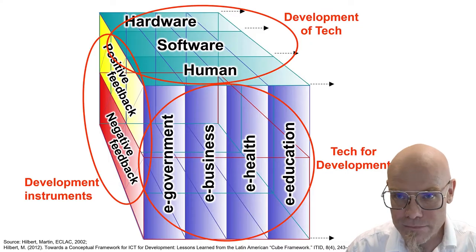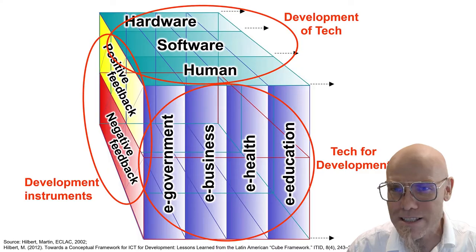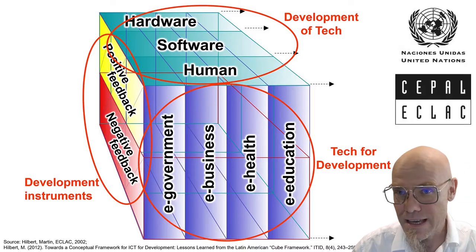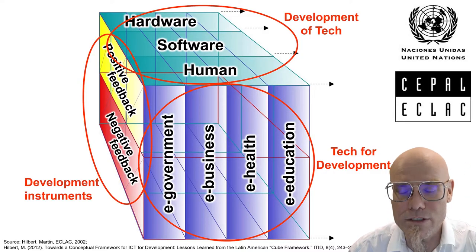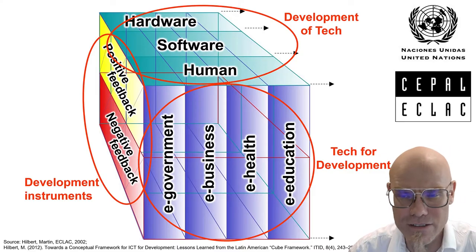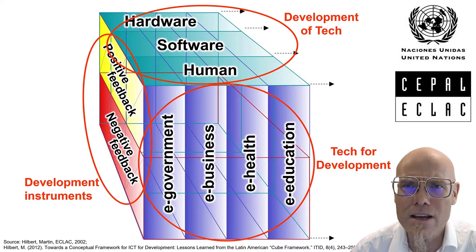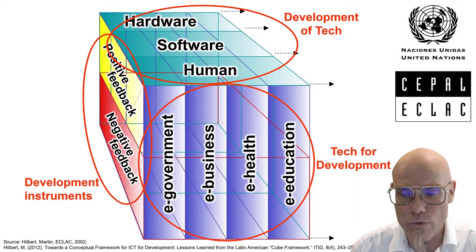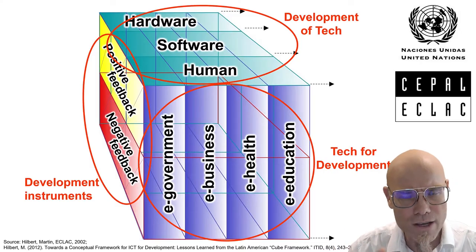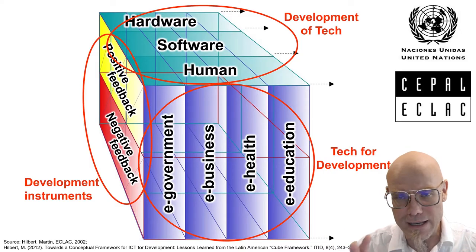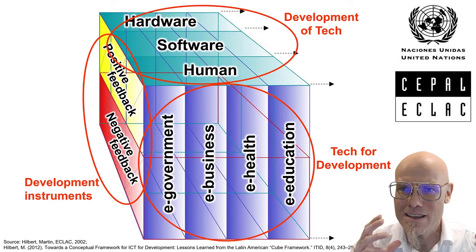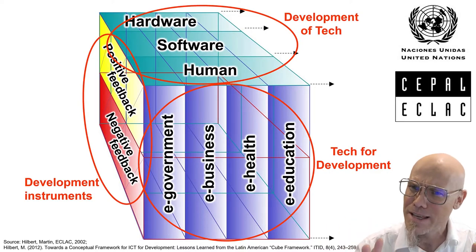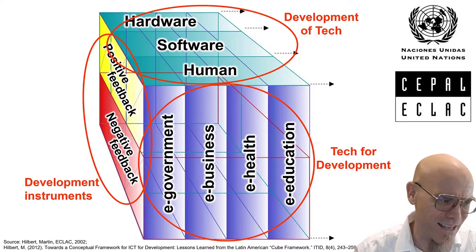These are the three dimensions. You have the development of technology—that's the basis, the technological infrastructure on which we build. Then you have technology for development or for social evolution, for social change. And you have the development instruments. Here you have public sector policies, private sector strategies, business strategy, or social change agendas from NGOs. Basically, here you try to socially construct that.